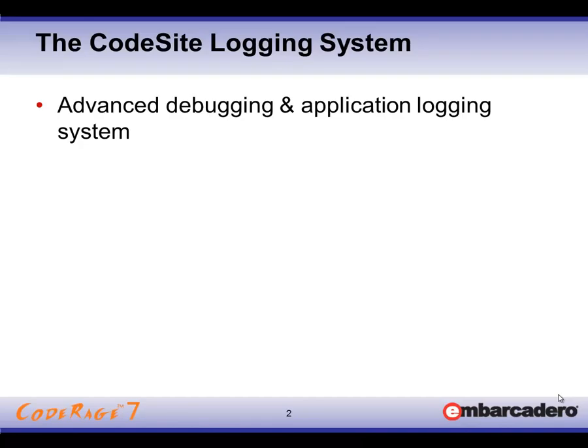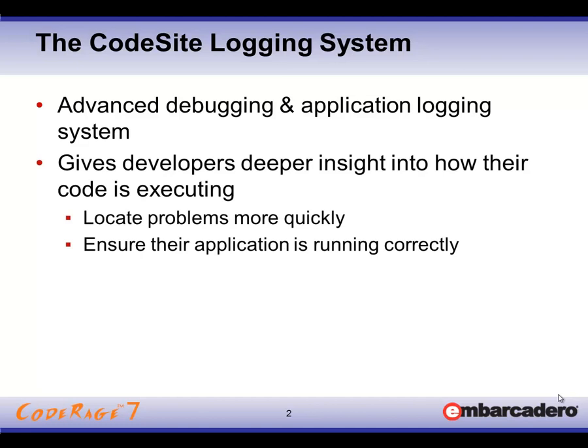CodeSight is an advanced debugging and application logging system that gives developers deeper insight into how their code is executing. One of the benefits is that it allows us to locate problems in our code more quickly. It also ensures our applications are running correctly. Today we'll see how we incorporate CodeSight into our applications and what kind of data we can get back and analyze.